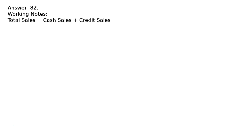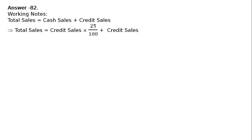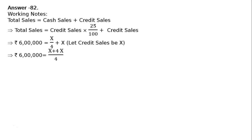Working note: Total sales equals cash sales plus credit sales. Since cash sales is 25% of credit sales, total sales equals credit sales × 25% plus credit sales. Let credit sales be x, so total sales equals x/4 + x, which equals 5x/4. This is equal to the given revenue from operations of ₹6 lakhs.